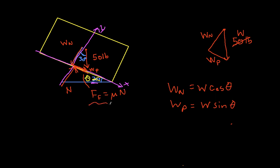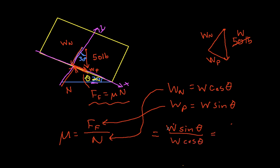The maximum frictional force is mu times N. So we can say that mu would be the maximal friction force over N. And if we are at static equilibrium at the point where if we make the angle any larger the box will start to slide, then F sub F will be equal to W P and N will be equal to W N. And so this ratio would then become W sine theta over W cosine theta. The W's cancel. Sine over cosine is tangent, so we have tangent of theta.